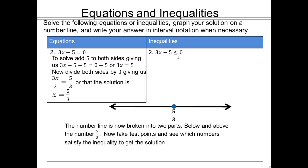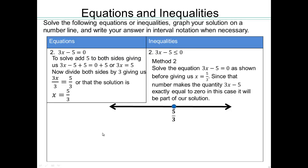Or in the second method, what will I do? The number line is now broken into two parts, above and below. 5 thirds is included in our solution, because you're allowed to have equal to 0. 5 thirds makes it exactly equal to 0. So that's in the solution. Now do a test point. So let's do some test point. So let's pick a point below 5 thirds.